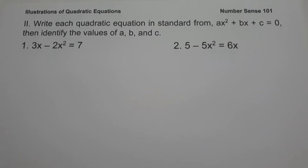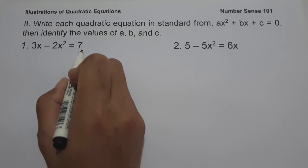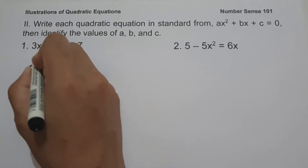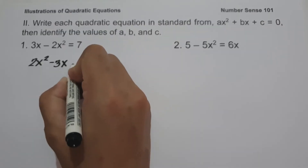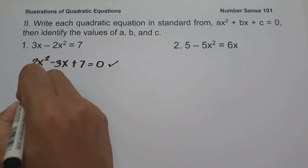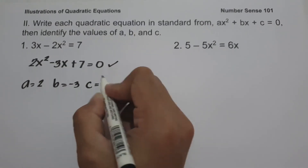On the second set of examples, we are going to write each equation in standard form ax squared plus bx plus c equals zero, and identify the values of a, b, and c. On number one, we have 3x minus 2x squared equals 7. Moving terms to the other side and writing the quadratic term first: 2x squared minus 3x plus 7 equals zero. So a equals 2, b equals negative 3, and c equals 7.